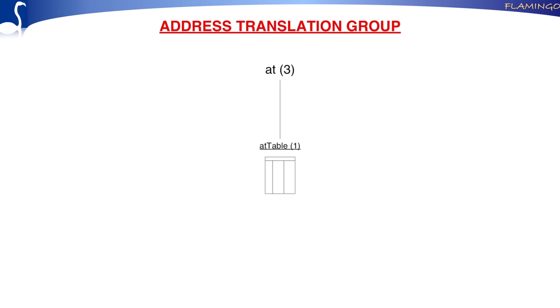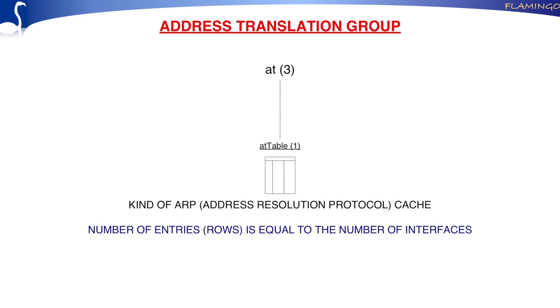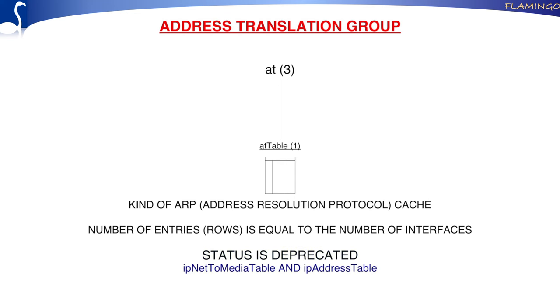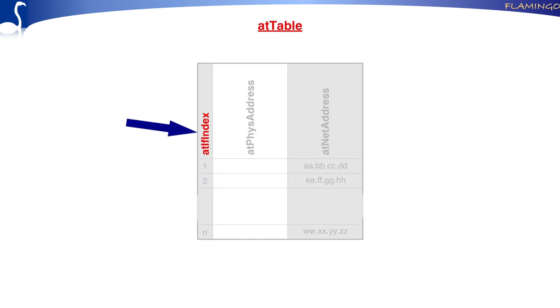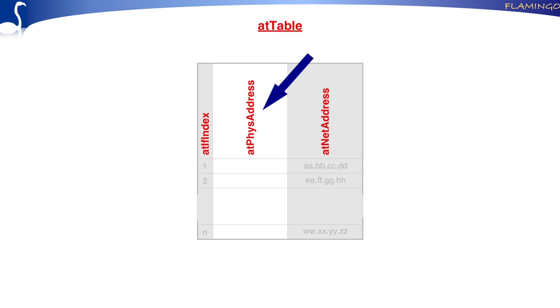Now the address translation group — it has just one single table, which you can look at as a kind of ARP cache. The number of entries equals the number of interfaces. The status of this table is deprecated; there are new tables with similar information: the IP net-to-media table and the IP address table. The table is indexed by interface index and net address (IP address), and maps to the physical address.